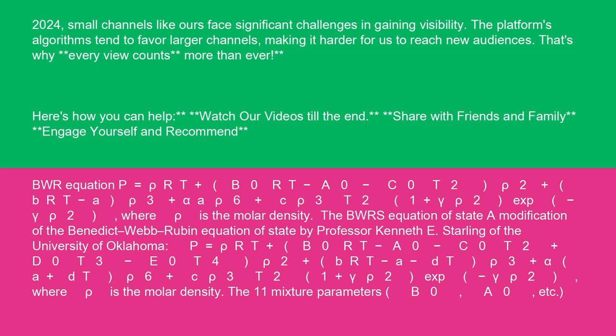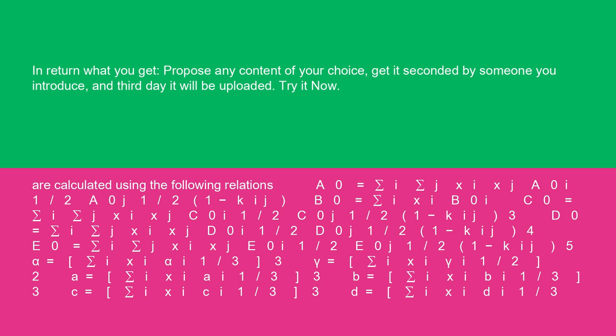The 11 mixture parameters (B0, A0, etc.) are calculated using the following relations: A0 equals sum over i,j of xi xj A0(ij)^(1/2) (1-kij); B0 equals sum over i of xi B0i; C0 equals sum over i,j of xi xj C0(ij)^(1/2) (1-kij)^3; D0 equals sum over i,j of xi xj D0(ij)^(1/2) (1-kij)^4.